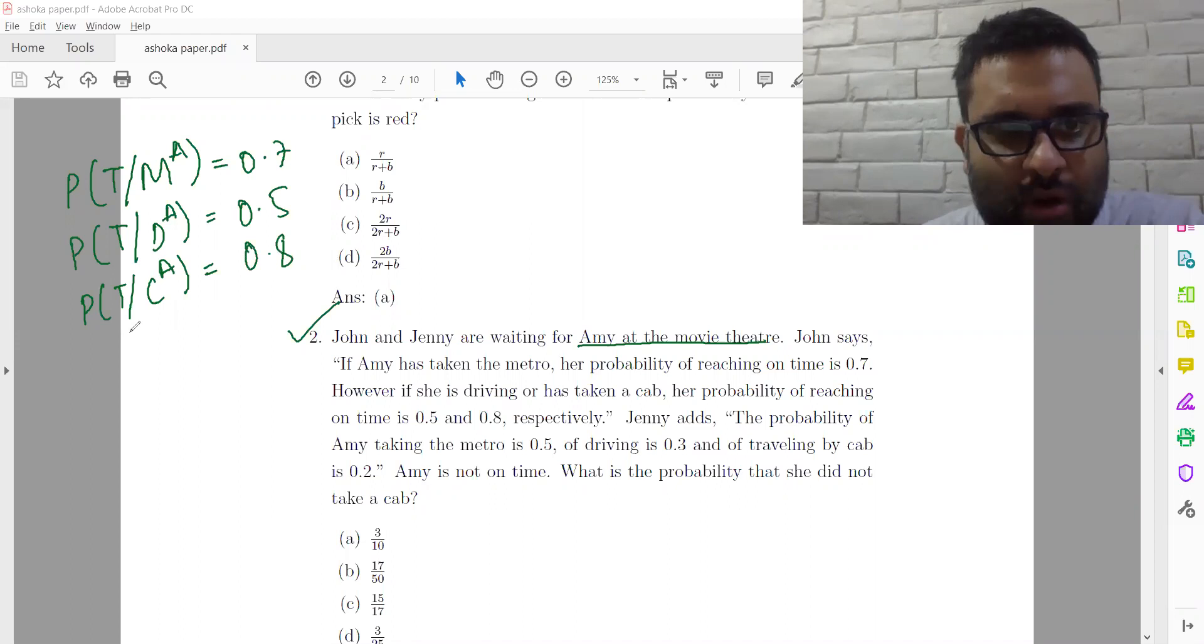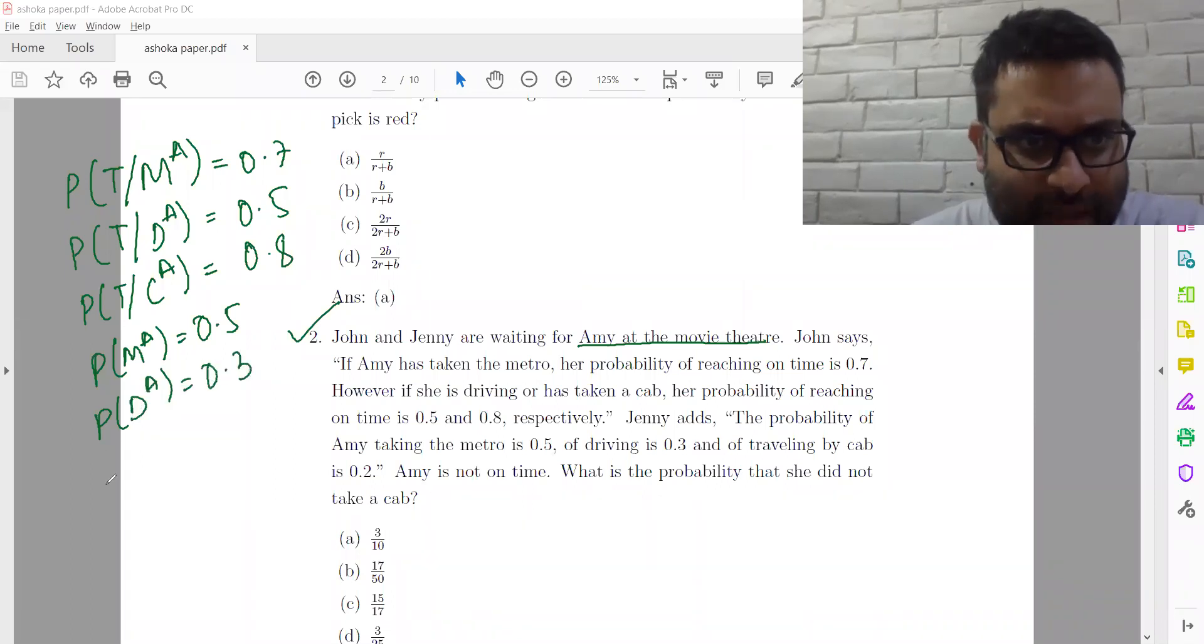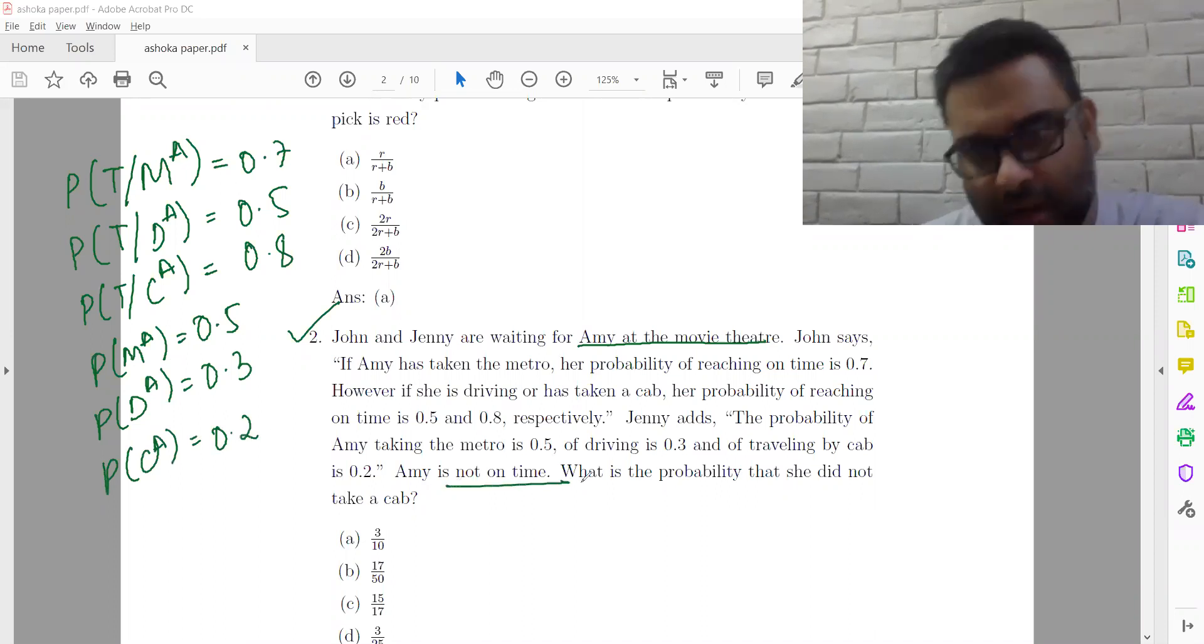Jenny adds, the probability of Amy taking the metro is 0.5. 0.5. Driving 0.3. And traveling by cab 0.2. Amy is not on time. What is the probability that she did not take the cab?